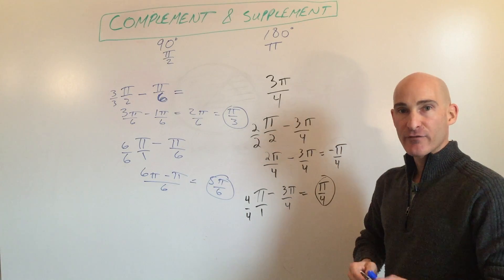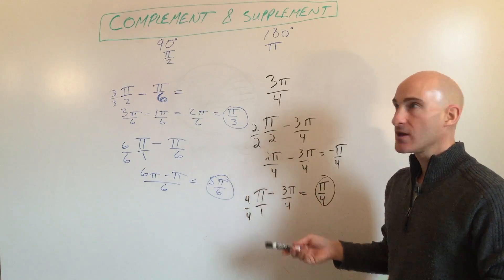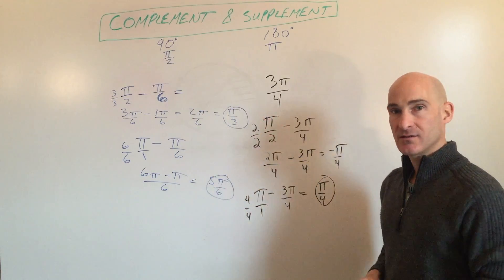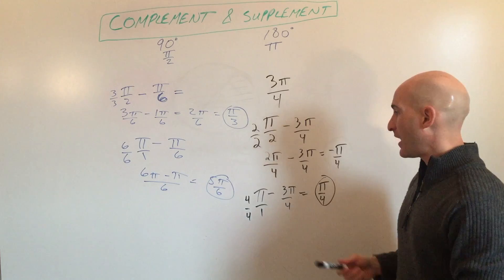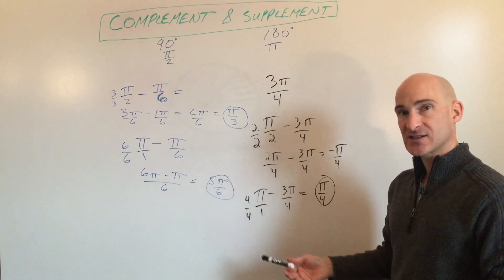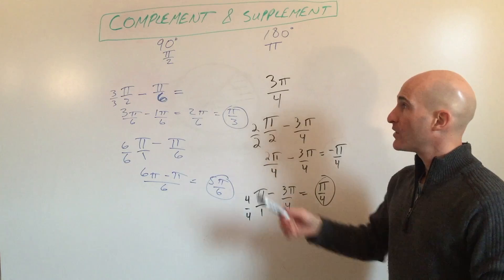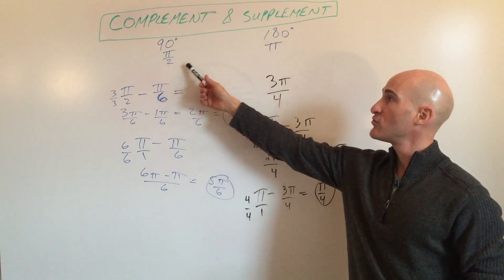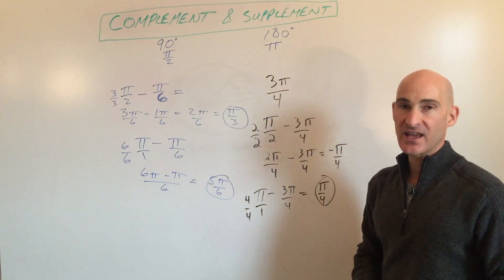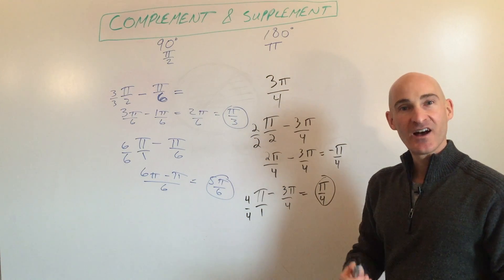So this has been a little bit about how to find complements and supplements working with the radian angle measurements. And you can see sometimes you don't get a complement or you might not get a supplement if it turns out to be negative. But again, the key is just to use π over 2 minus the angle or π minus the angle, and you've got it. I'll see you in the next video.